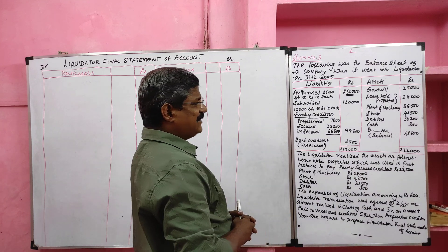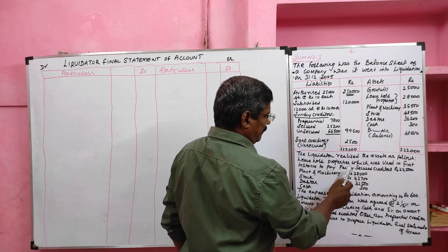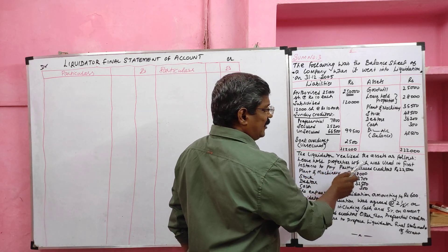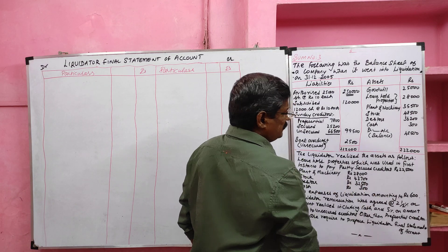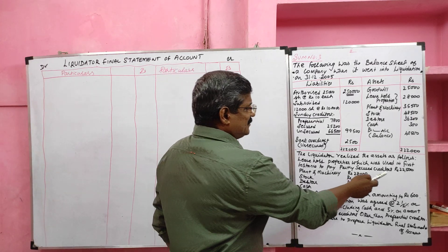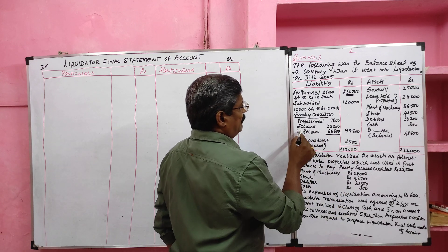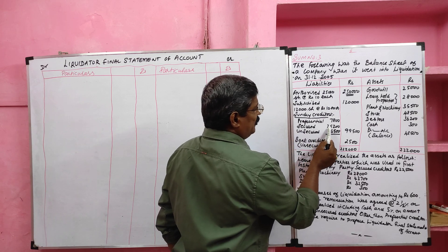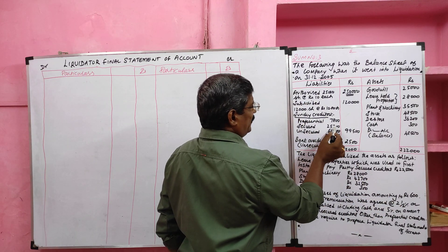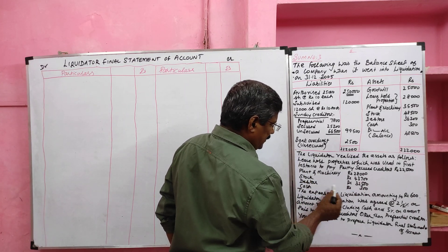The leasehold properties were used in the first instance to partly pay the secured creditor — rupees 22,500 was the realized value of the leasehold property. On the leasehold property, the company had borrowed a loan of rupees 25,200, which is the secured creditor value. Then plant and machinery, stock, debtors, and cash are the remaining assets.